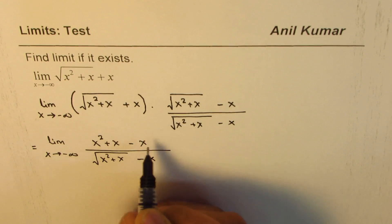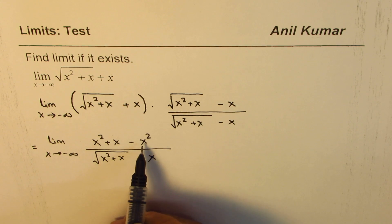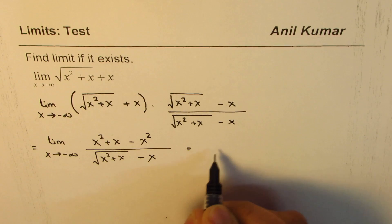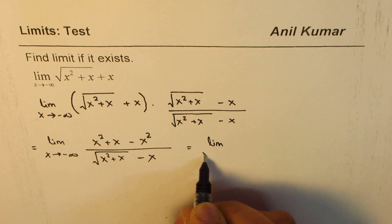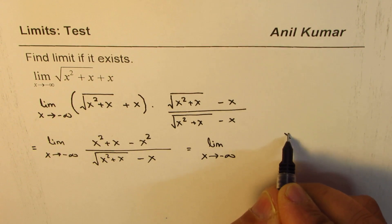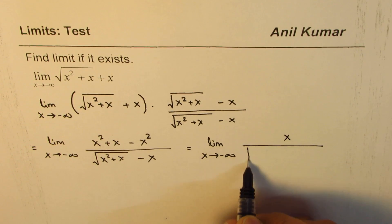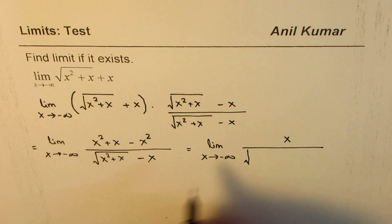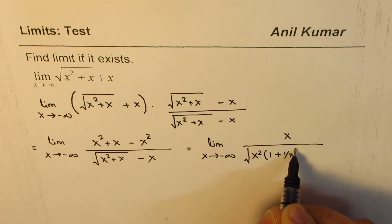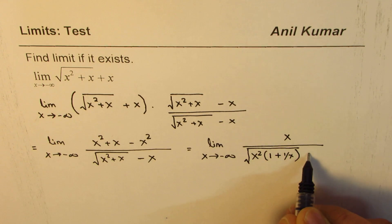In the numerator, x squared minus x squared is zero, so you are left with x in the numerator. We can write this as: limit x approaches minus infinity, x in the numerator. In the denominator, within the square root, I can take x squared common, giving 1 plus 1 over x, and this is minus x.